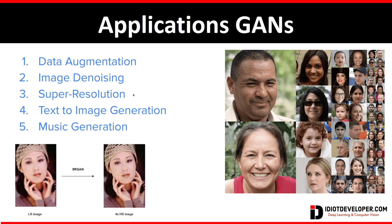The third application is super resolution. Here in this image you can see a lower resolution image and then a 4x higher resolution image — you can see the improvement. You may search SR-GAN as one application of GAN. Next is text-to-image generation, which can also be done with GAN, and music generation as well. These are just a few applications — there are many more which we will see in future videos.